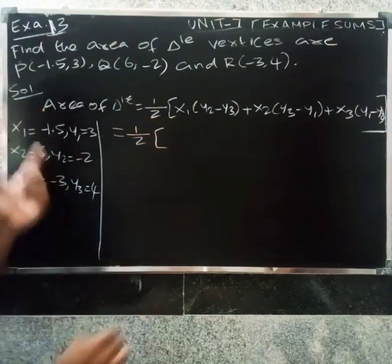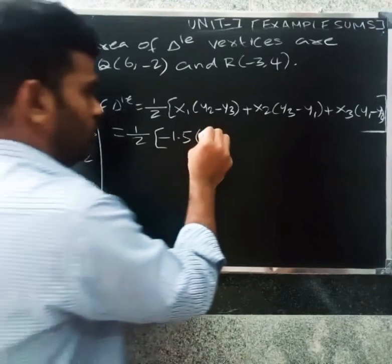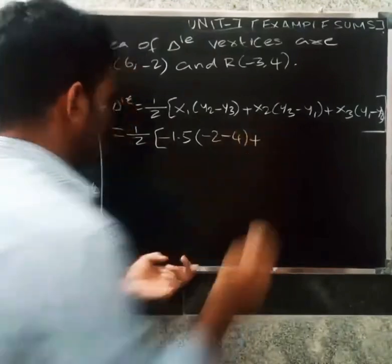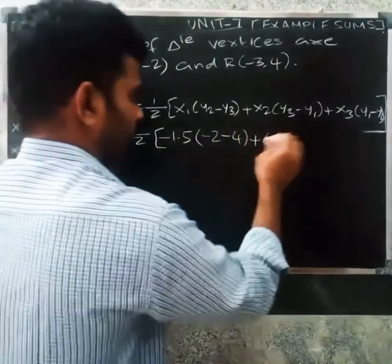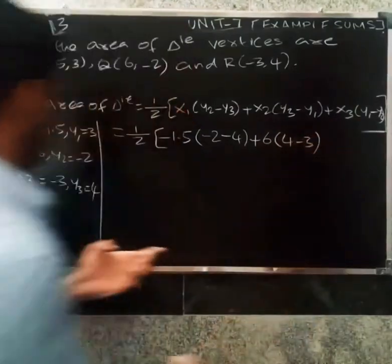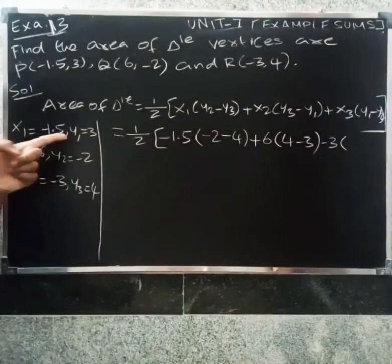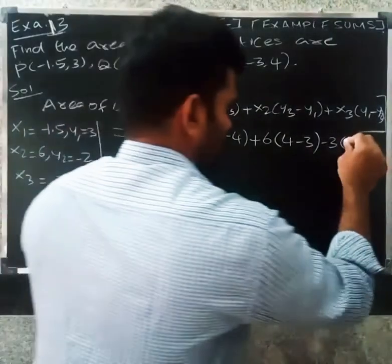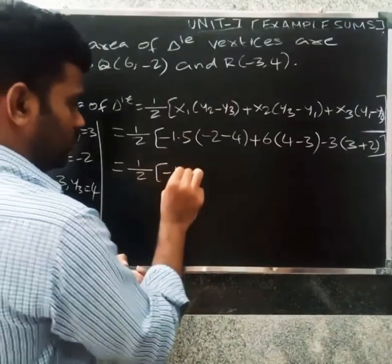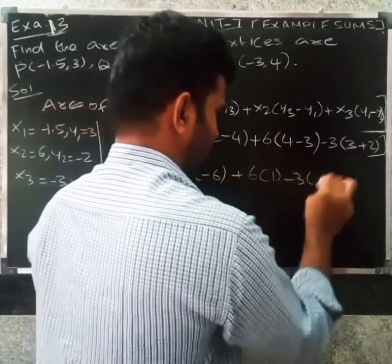Substituting: 1 by 2 into (-1.5) into (-2 minus 4) plus 6 into (4 minus 3) plus (-3) into (3 minus (-2)). That gives 1 by 2 into (-1.5) into (-6) plus 6 into 1 plus (-3) into 5, which is 1 by 2 into 9 plus 6 minus 15.